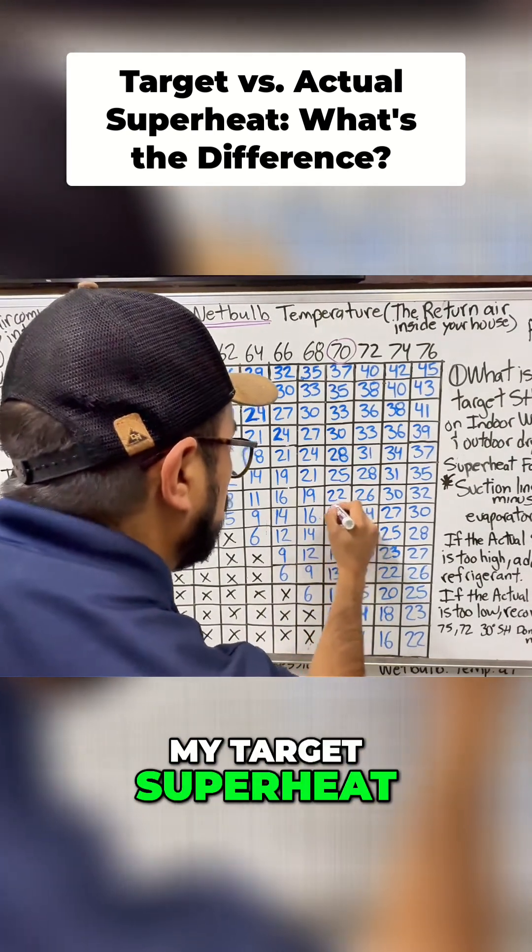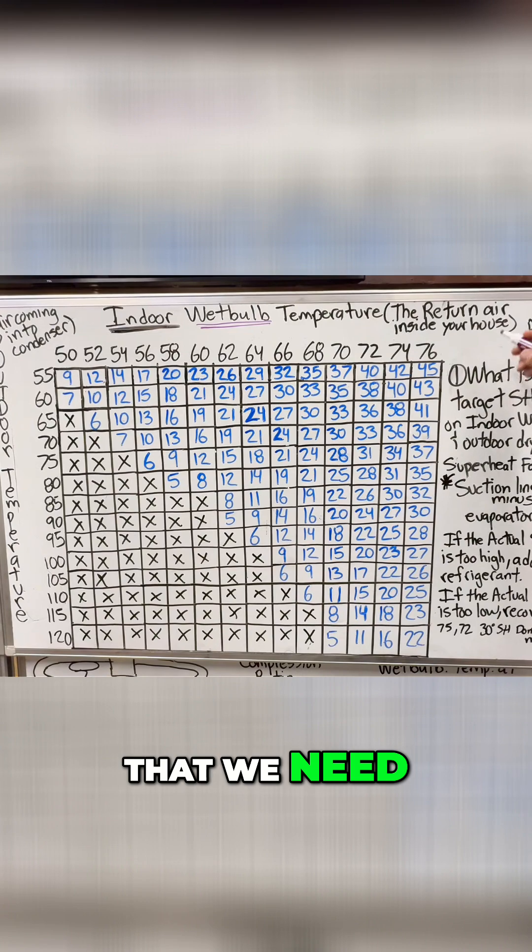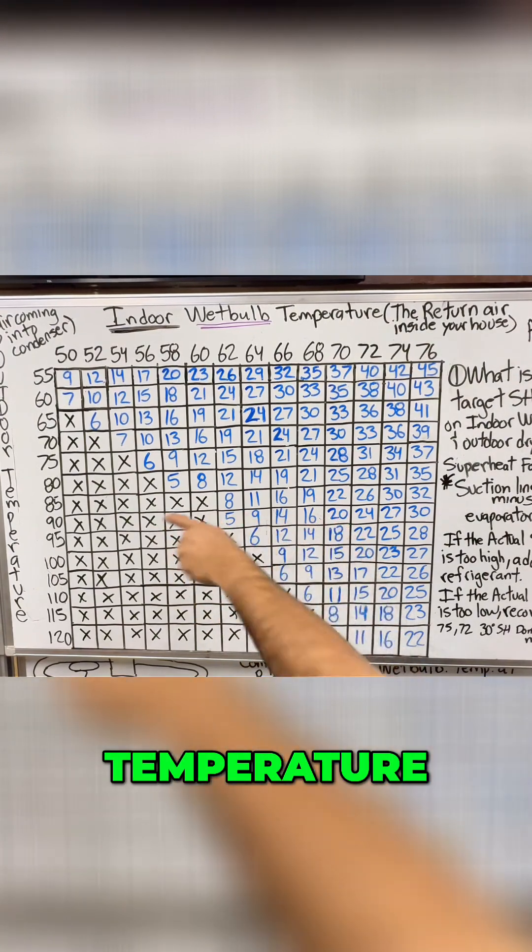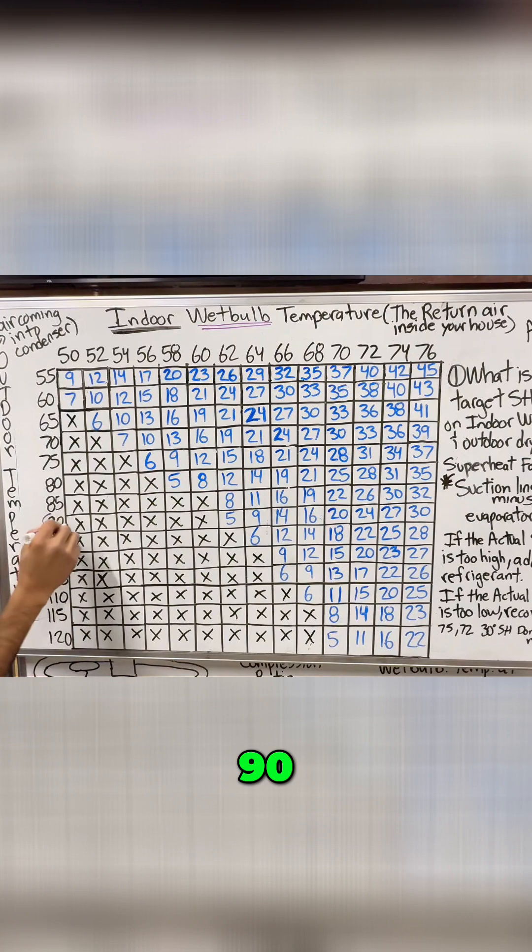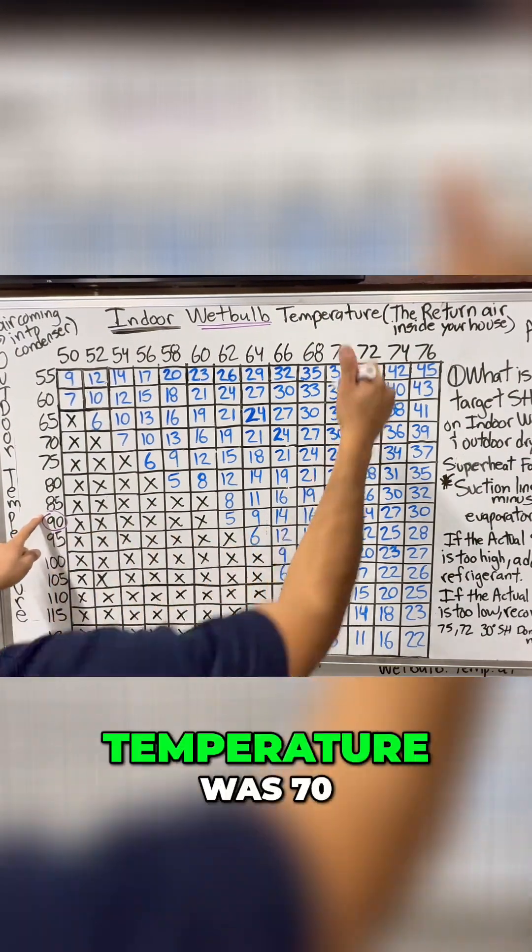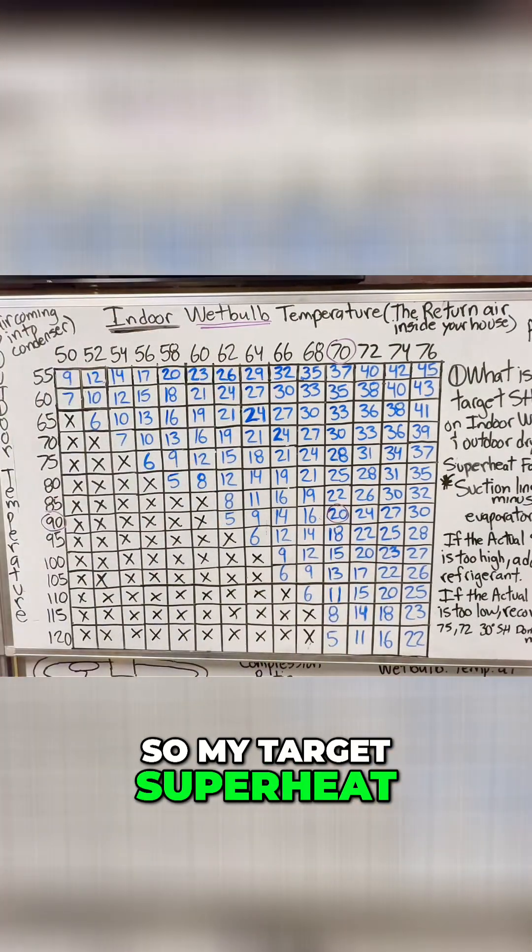My target superheat should be 20. We have an outdoor temperature of 90 degrees for that package unit and my wet bulb temperature was 70, so my target superheat should be 20.